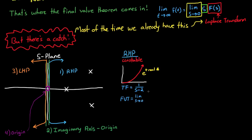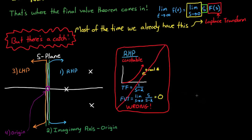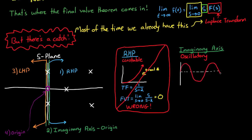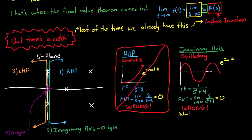Not only do we know that the final value doesn't exist, but the final value theorem actually produces a wrong value if you use it. So we don't want to use this theorem if the system has a pole anywhere in the right half-plane. For the second region, if a pole exists on the imaginary axis, then the impulse response of the system will be oscillatory, and therefore the final value is again undefined — because e raised to an imaginary number produces sines and cosines. If you use the final value theorem in this case, it again produces the wrong value; it will give us the mean value of the oscillation, which isn't what we're going for. So you don't want to use the final value theorem if your system has a pair of poles on the imaginary axis.